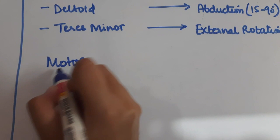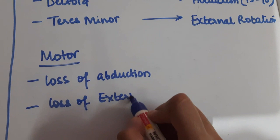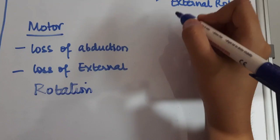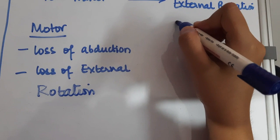So when the axillary nerve is paralyzed, there is a loss of abduction and external rotation at the shoulder, which makes the limb remain in an attitude of adduction and internal rotation.